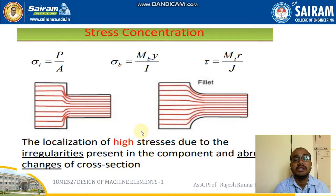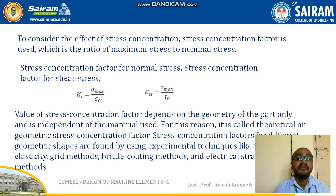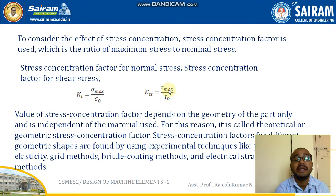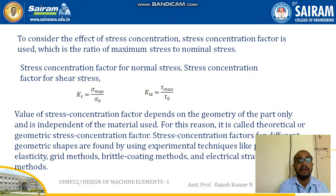The localization of high stresses due to irregularities and abrupt changes of cross-section is addressed by using the stress concentration factor. The stress concentration factor is the ratio of maximum stress to nominal stress. For normal stress: K_T = σ_max / σ₀, and for shear stress: K_T = τ_max / τ₀. These apply for both brittle and ductile materials under normal and shear conditions respectively. The value of the stress concentration factor depends only on the geometry of the part and is independent of the material used. For this reason, it is called the theoretical or geometrical stress concentration factor.